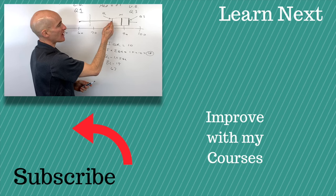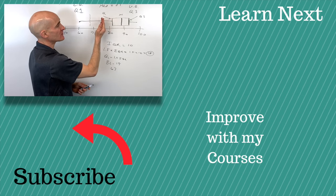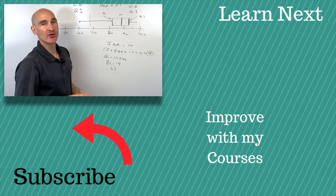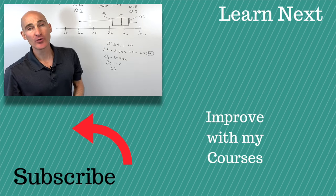Take the lower quartile, subtract one and a half times the interquartile range. If there's any data points that are lower, those will also be outliers. So great job.